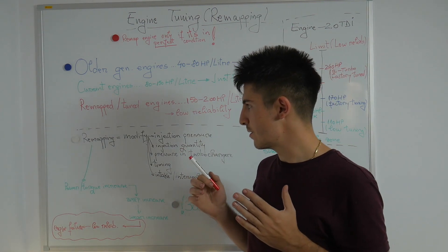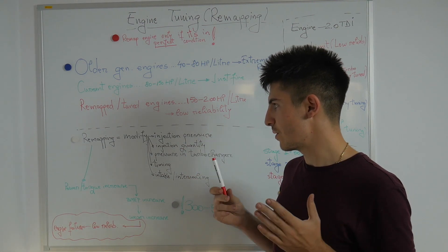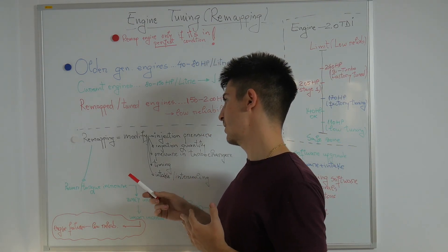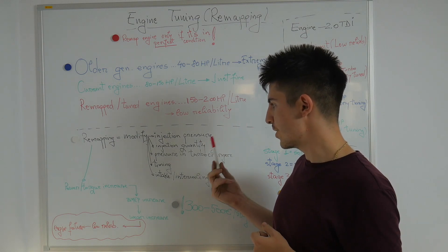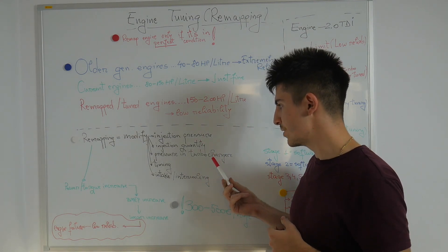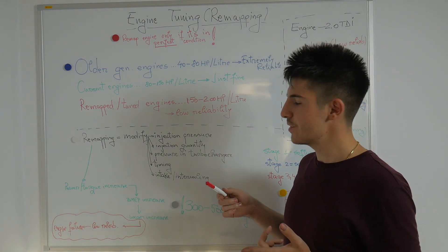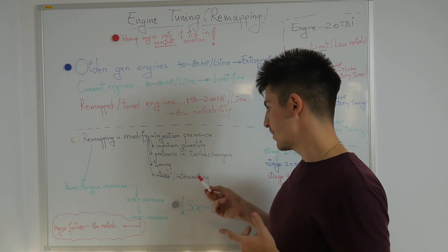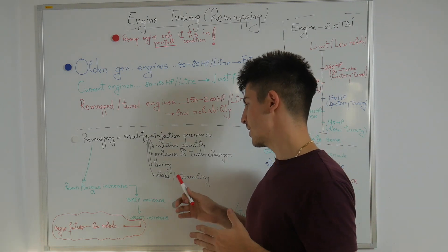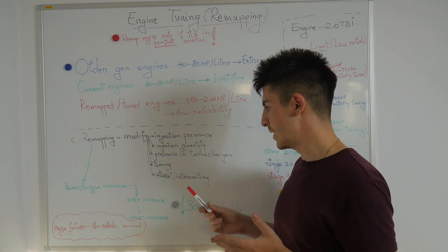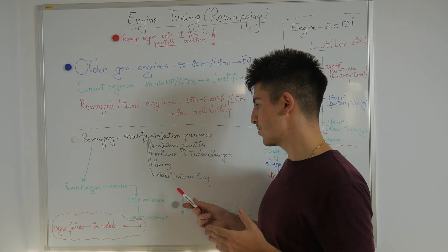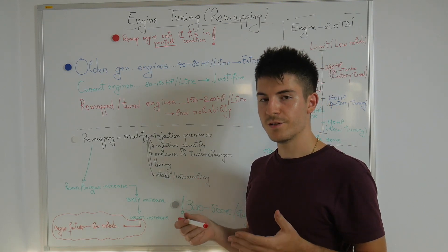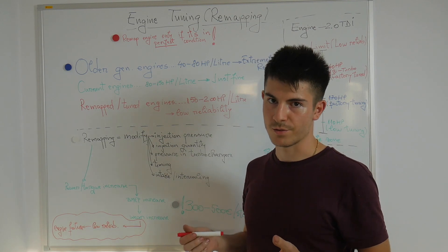Now what does remapping actually do to our ECU? Well by remapping the software we actually modify the injection pressure, the injection quantity, the pressure in the turbocharger or supercharger, the timing of the valves, and intake and intercooling are upgraded. Intake and intercooling are generally related. We do our best to cool down the air from the intake to have a better air fuel ratio and have better results.